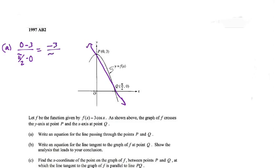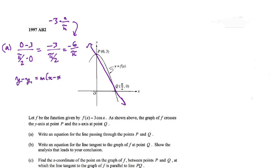On top I get negative three, on the bottom pi over two. We don't want a fraction inside a fraction, so I multiply top and bottom by two, or think of it as negative three times the reciprocal of pi over two, which is two over pi. That gives us negative six over pi — that's our slope. Now I'll use point-slope form from algebra: y minus y₁ equals m times x minus x₁, which is actually the same form we use in calculus for a tangent line.